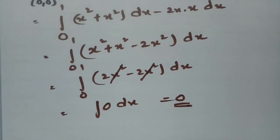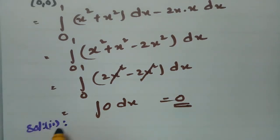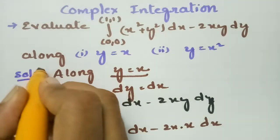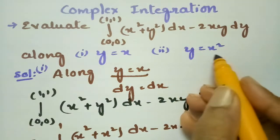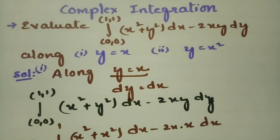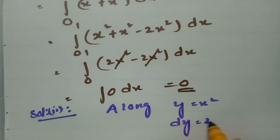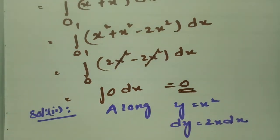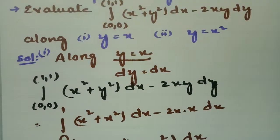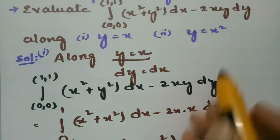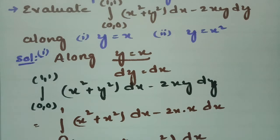Now Solution 2 is along y = x². If y = x², then dy = 2x dx. From the question, the integral is from 0 to 1 of (x² + y²)dx minus 2xy dy.